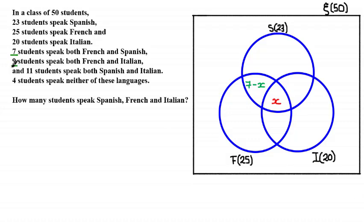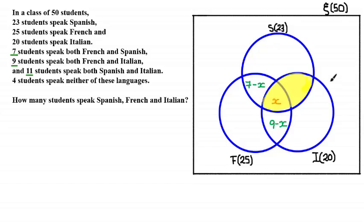9 students speak both French and Italian, represented by this shaded region. The sum must equal 9, so the outer part of that intersection is 9 minus X. We're then told 11 students speak both Spanish and Italian, represented by this shaded region, so the outer part in that case is 11 minus X, since 11 minus X plus X equals 11.